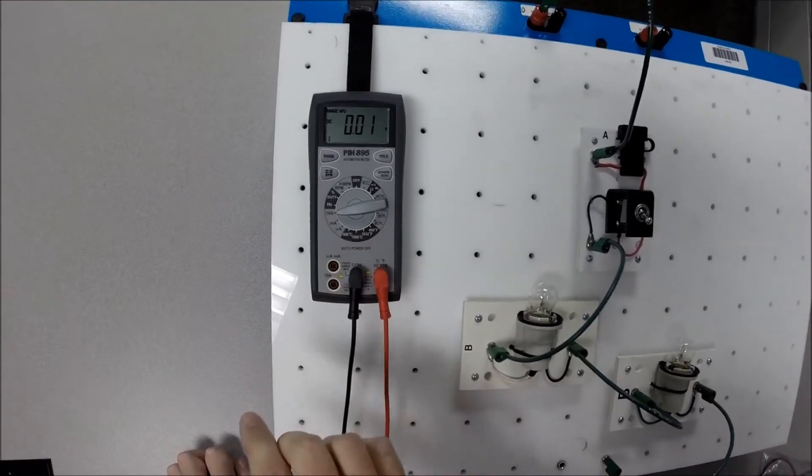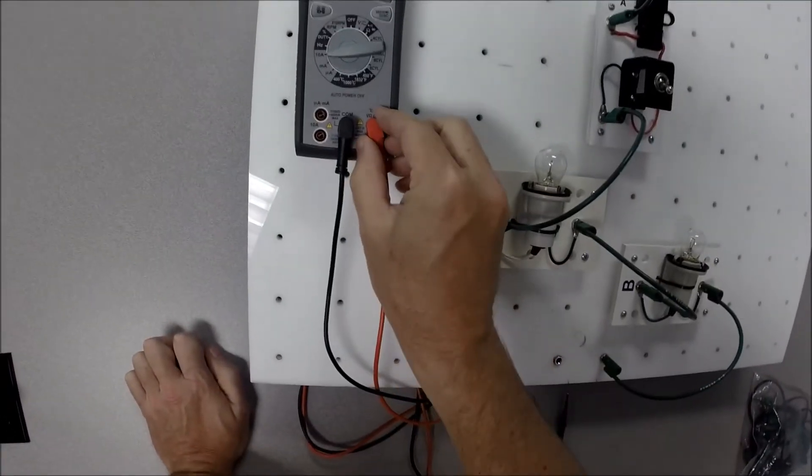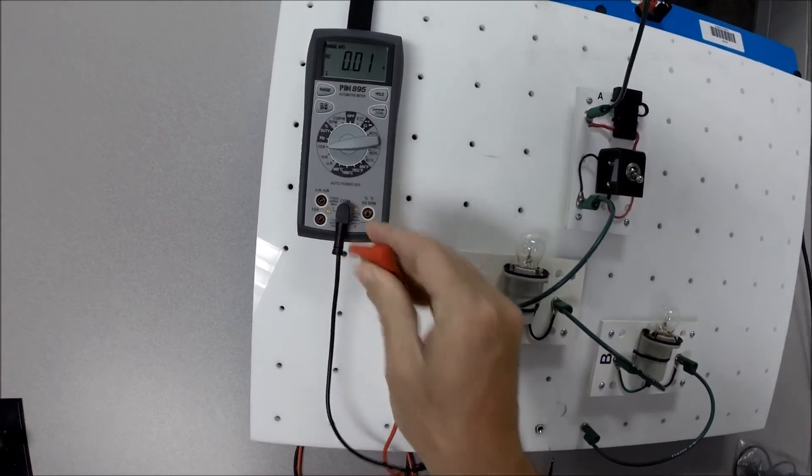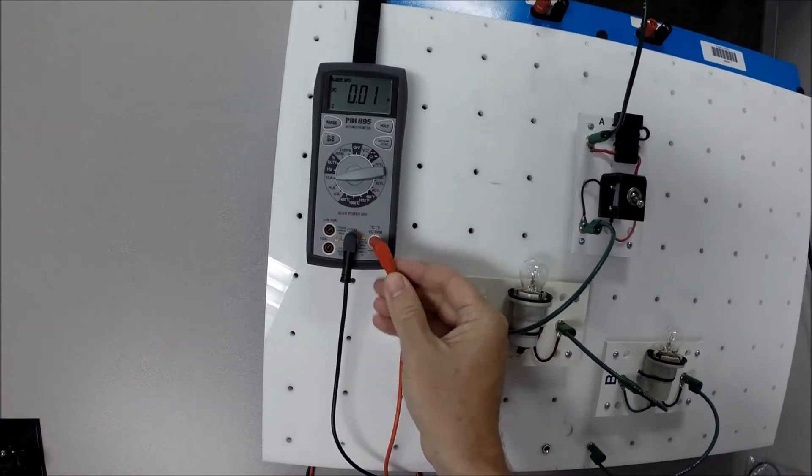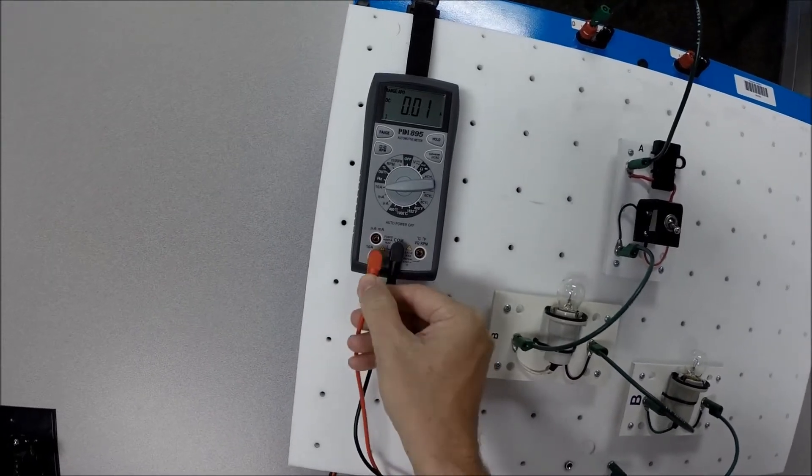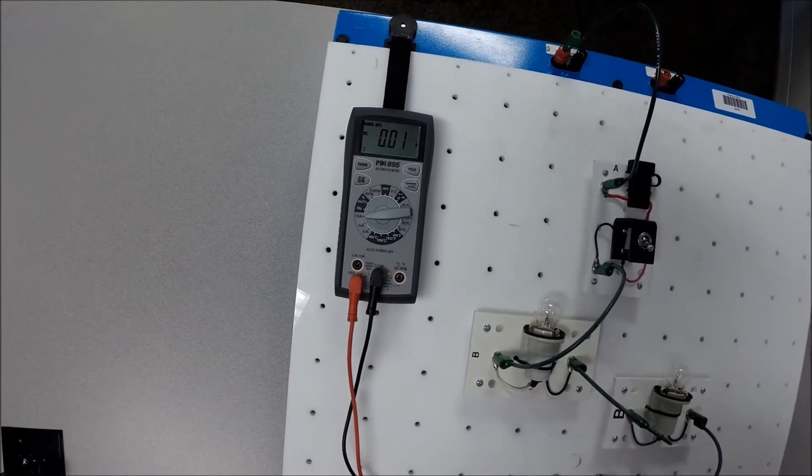Start on the 10 amp scale, because we don't want to blow a fuse. Now, very important that we remember to move our leads. So, we're going to take our red lead from the voltage slot, and we're going to move it over here to the 10 amp slot. So, now the meter is ready to measure amperage.